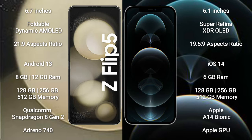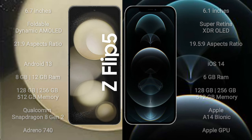Samsung Galaxy Z Flip 5 features a Qualcomm Snapdragon 8 Gen 2 processor and Adreno 740 GPU. iPhone 12 Pro comes with 6GB RAM and 128GB, 256GB, or 512GB internal storage, powered by the Apple A14 Bionic processor and Apple GPU.